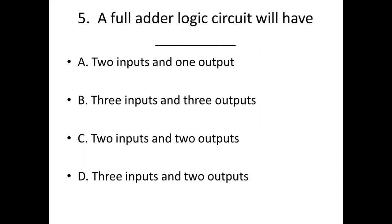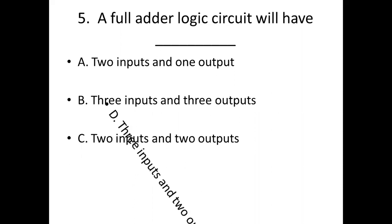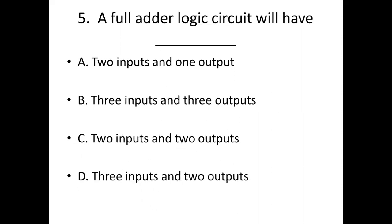Fifth bit: A full adder logic circuit will have dash. Option A: 2 inputs and 1 output. Option B: 3 inputs and 3 outputs. Option C: 2 inputs and 2 outputs. Option D: 3 inputs and 2 outputs. Answer: Option D, 3 inputs and 2 outputs.